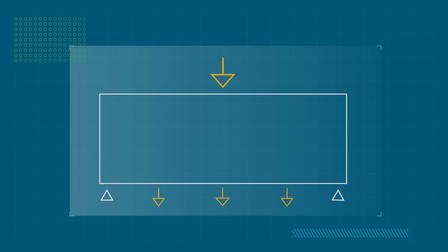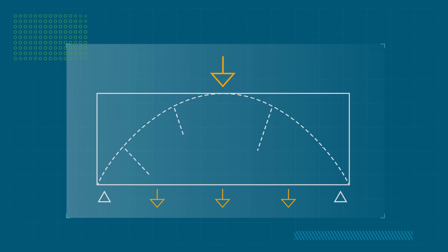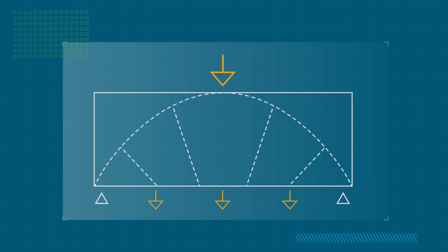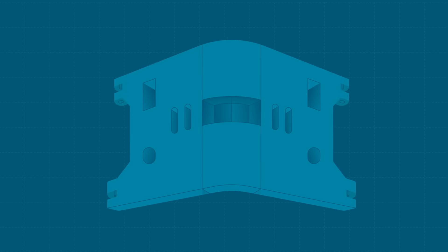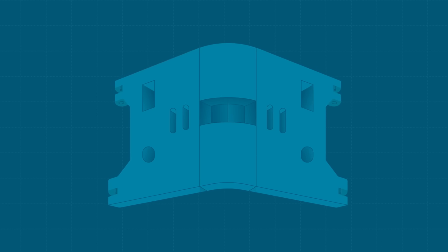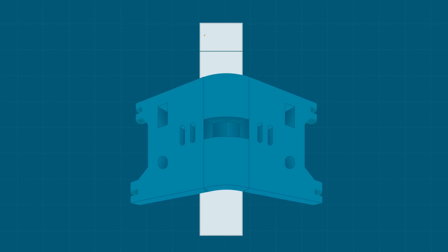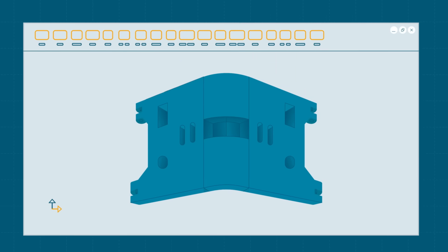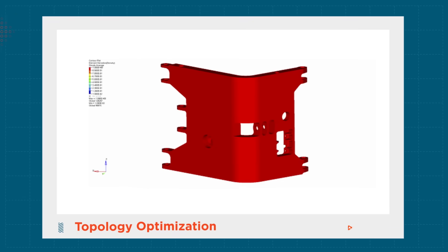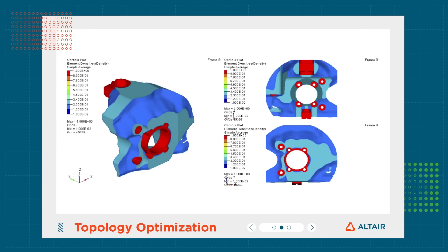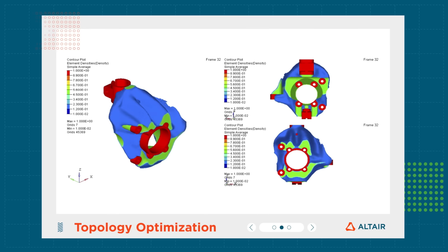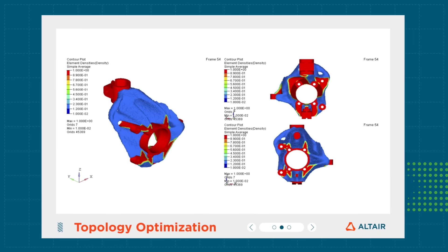Imagine a simple beam that needs to carry a single load. Engineers can typically draw upon experience to propose a workable solution. But when faced with a complex part packaged into a tight space that needs to carry multiple loads, they could use a helping hand. Rather than validating an existing design, topology optimization uses physics to enhance human creativity by proposing forms that can be easily evolved into a finished product.